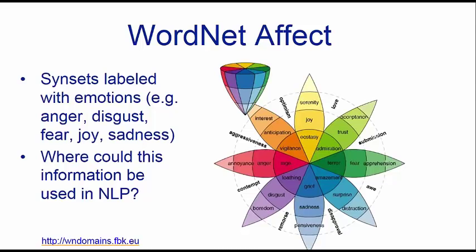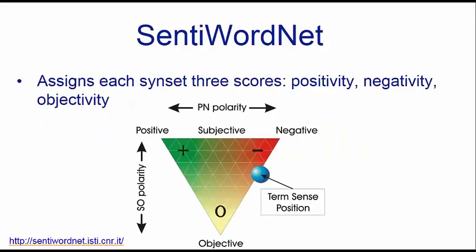Along the same lines, SentiWordNet is another layer — a coarser classification of emotions primarily focusing on whether a word reflects a positive or negative emotion, without necessarily specifying whether it's fear or sadness. This is also a public resource.